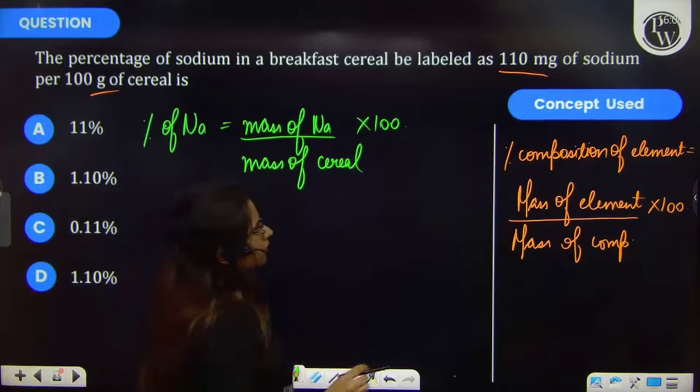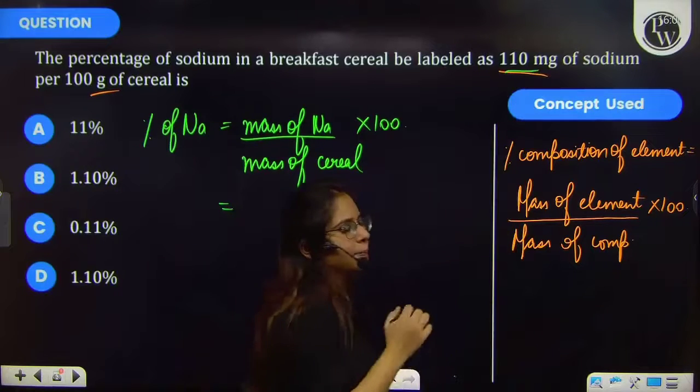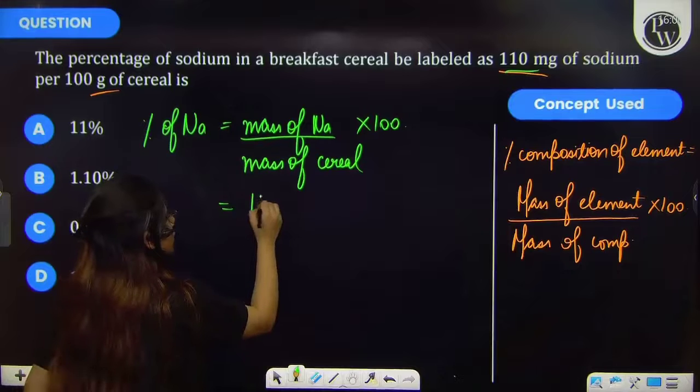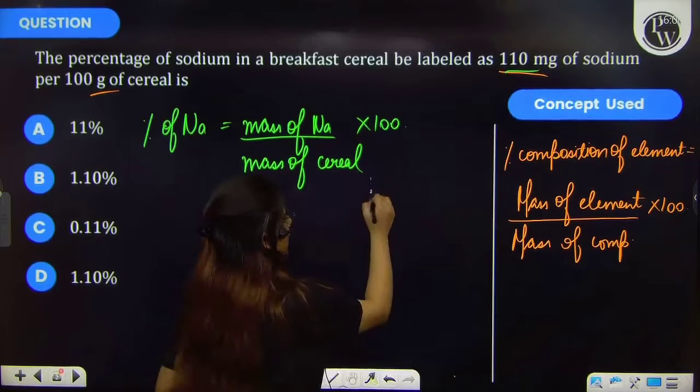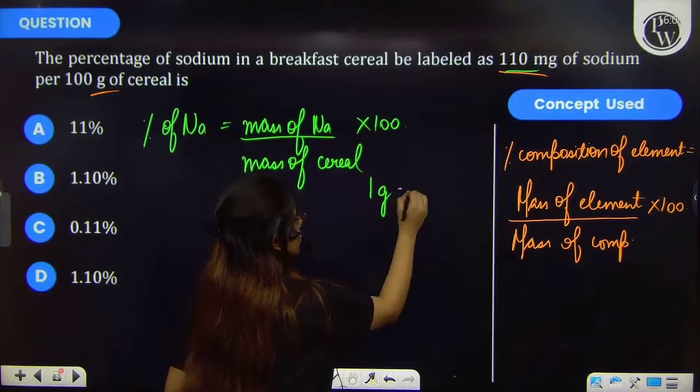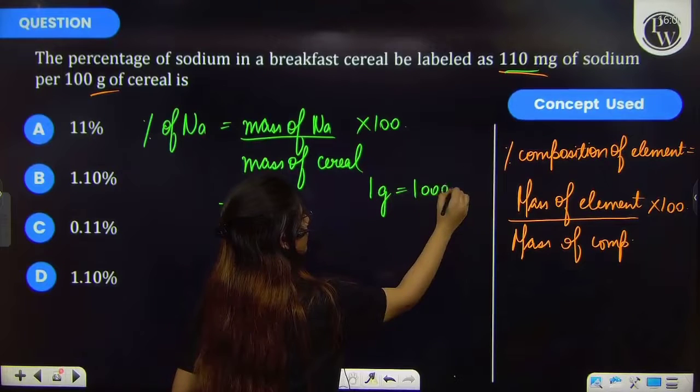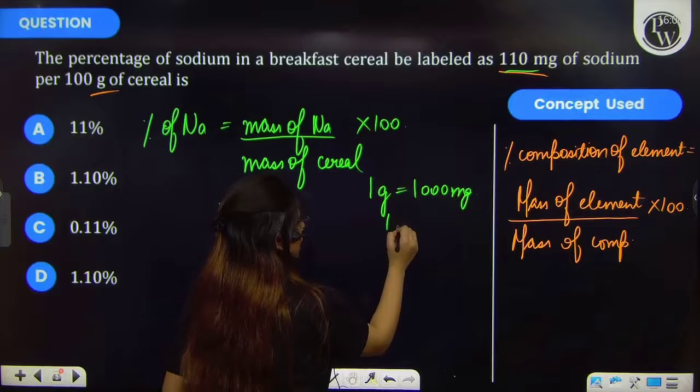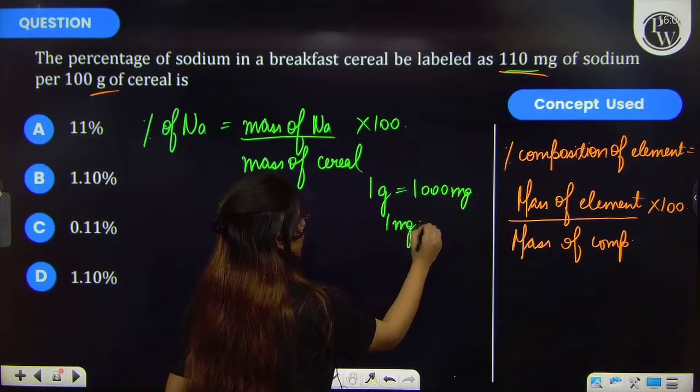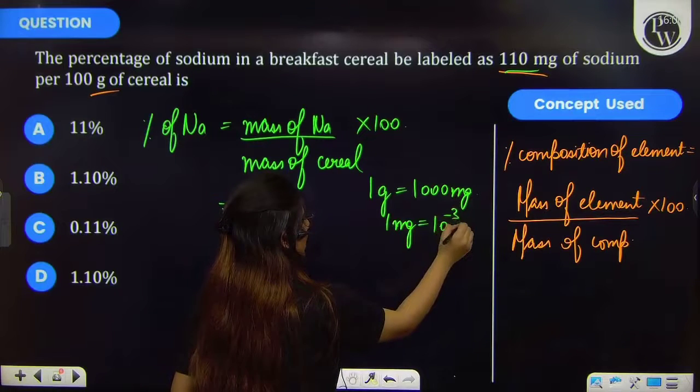Mass of sodium is 110 mg but this is present in mg and we have to find the answer in grams. So, 1 g is equal to 1000 mg and therefore, 1 mg will be equal to 10 raised to the power minus 3 g.